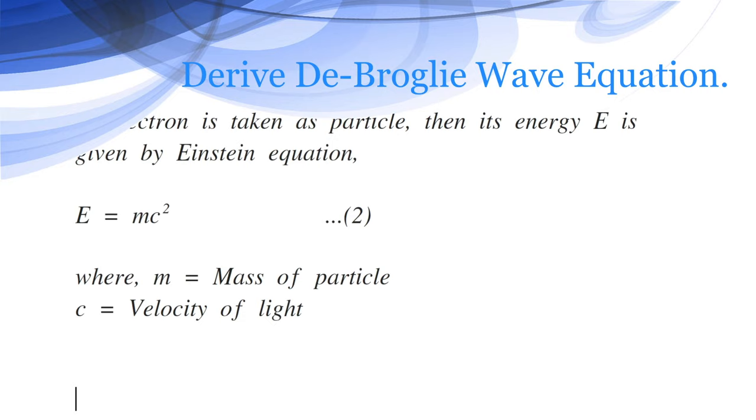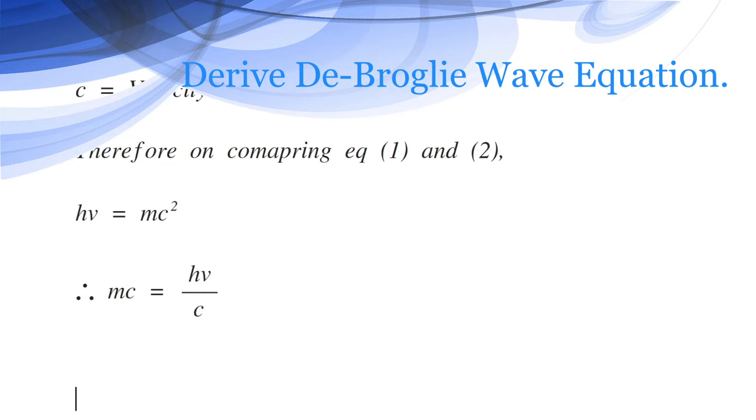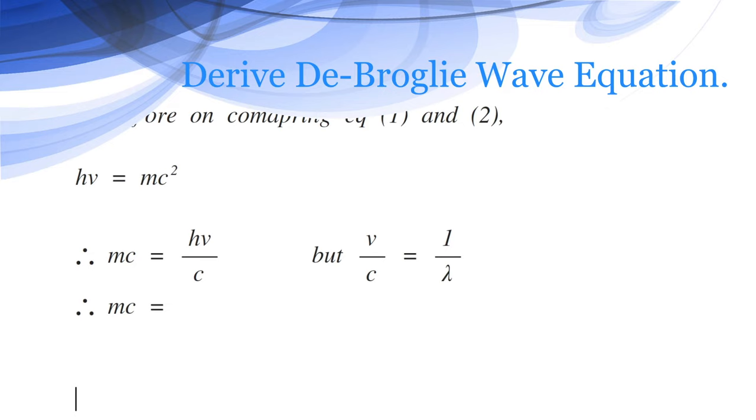Therefore, when comparing equation 1 and equation 2, we get h nu equals mc square. Therefore, mc equals h nu by c. But nu by c is 1 by lambda. Therefore, mc becomes h by lambda.